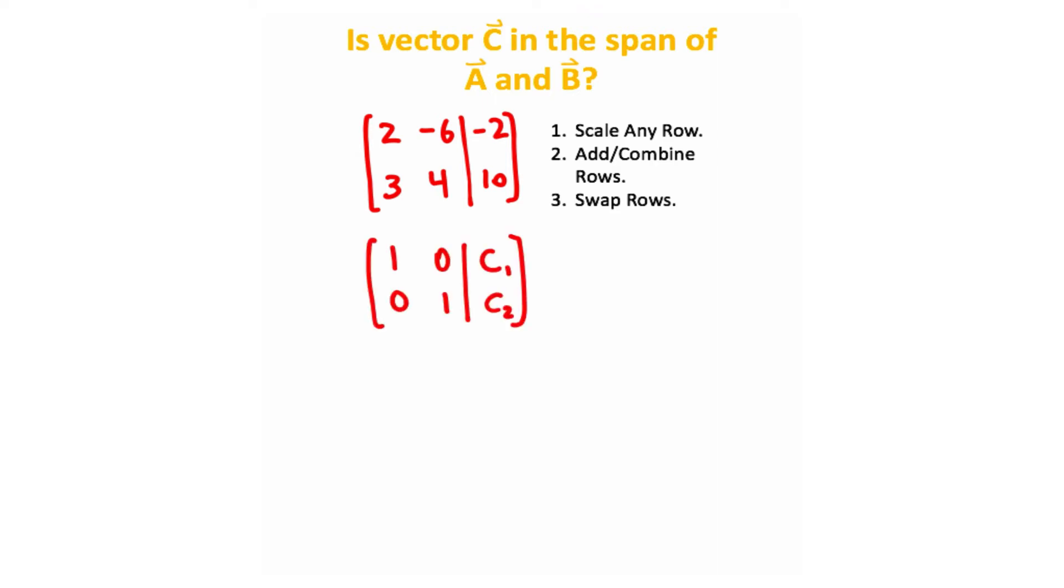So what I'm trying to end up with is what's called reduced row echelon form, and then this will give us the two solutions for C1 and C2. So let's see if we can get this into that format. So what I'm going to start by doing is take each of the rows, row one and two, and I'm going to scale each of them.